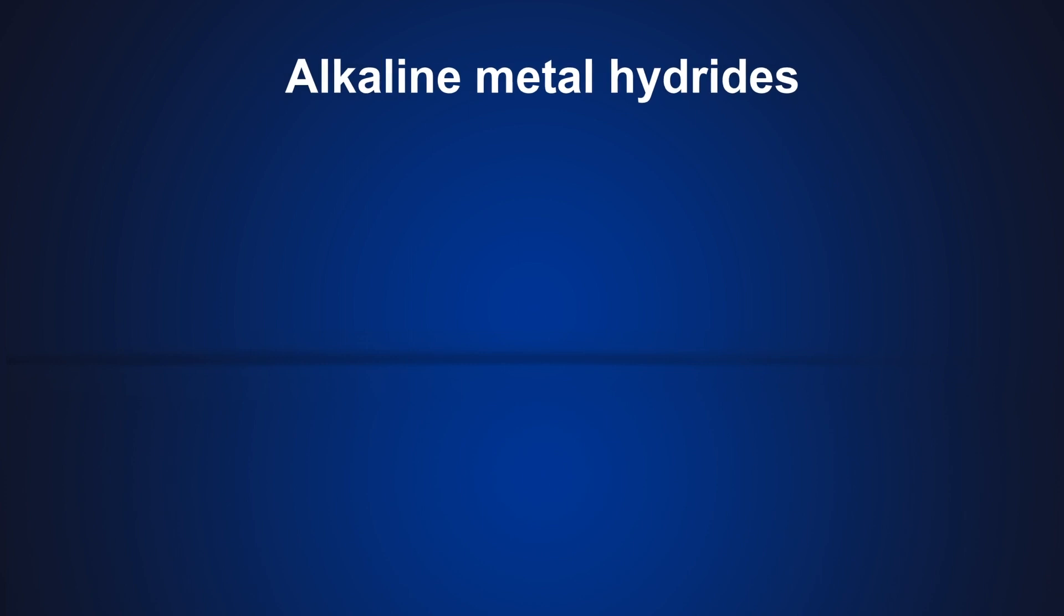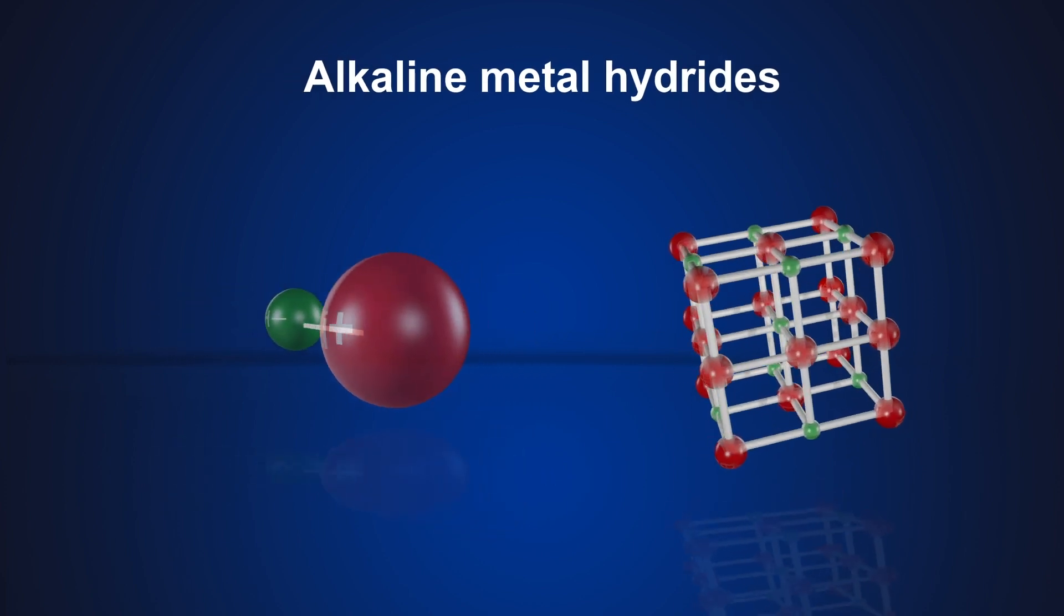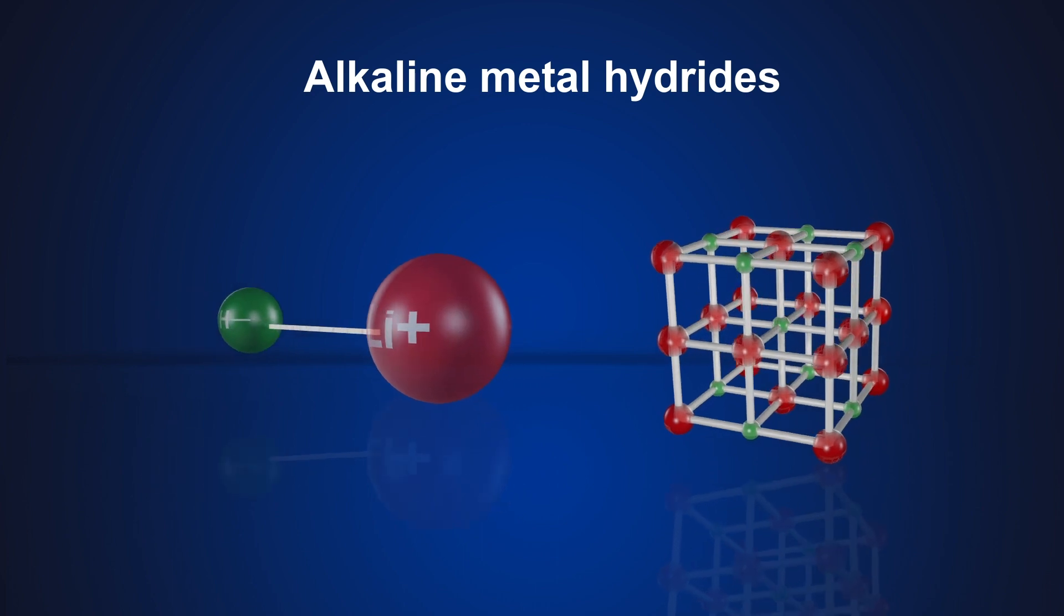For example, alkali and alkaline earth metal hydrides absorb hydrogen by forming ionic bonds, liquid hydrides via covalent bonds, and carbon-based materials by physical interactions.